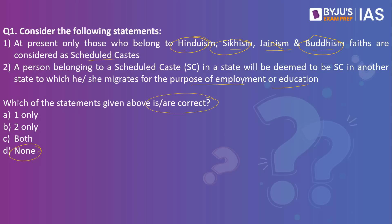When you look at the second statement: a person belonging to a Scheduled Caste in a state will be deemed to be an SC in another state to which he migrates for employment or education. This is also wrong. For example, if a caste is declared Scheduled Caste in Maharashtra but not in Uttar Pradesh, the person migrating to UP will not be entitled to reservation there. It is only restricted to that state — so a person migrating may not get SC reservation benefits.